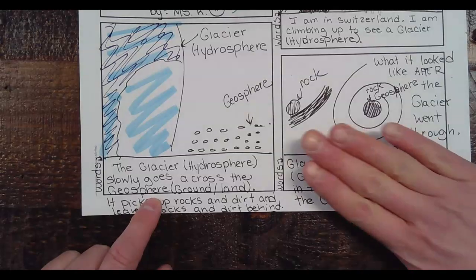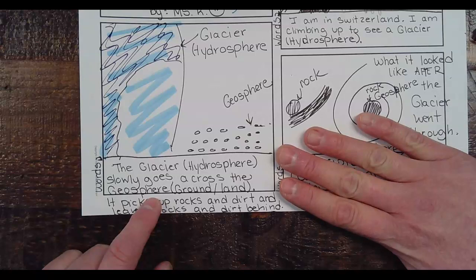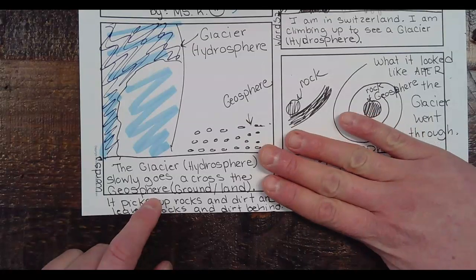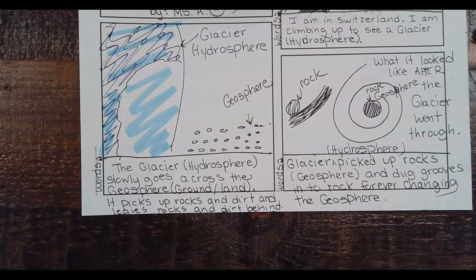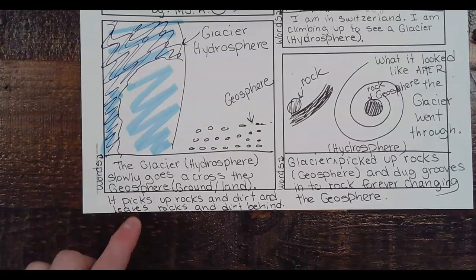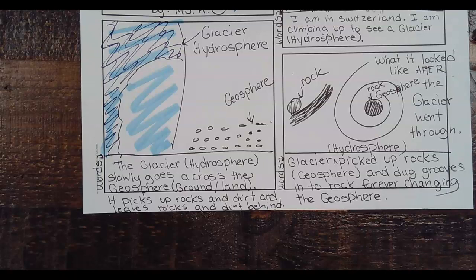The glacier — the hydrosphere — slowly moves across the geosphere. At its speediest, a glacier moves about five inches or centimeters a year. Over time you can measure it; you could put a stake at the start of each year and another at the end to see exactly how far it's moved. It picks up rocks and dirt and leaves rocks and dirt behind. This is one way the hydrosphere — the ice in the glacier — interacts with the geosphere: picking up part of the ground and depositing it.